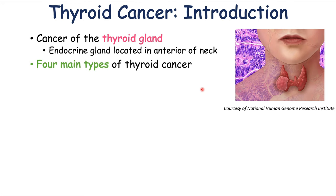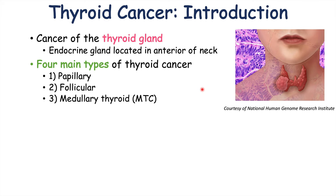There are actually four main types of thyroid cancer, or thyroid carcinoma. One is known as papillary thyroid carcinoma, which is the most common type. The second is follicular. The third is medullary thyroid carcinoma, or MTC. And the fourth is anaplastic thyroid carcinoma. All of them have similar signs and symptoms, but there are some differences we'll discuss as we go through this lesson.